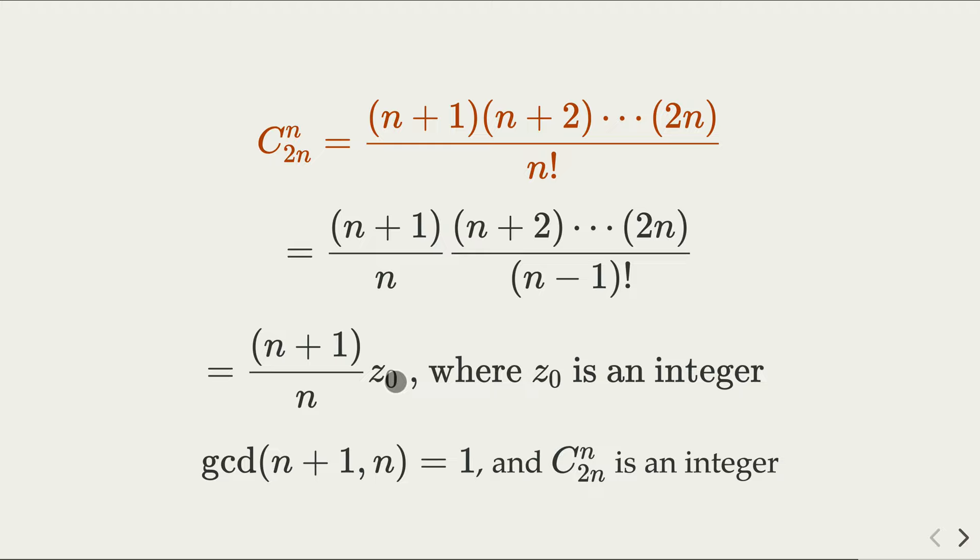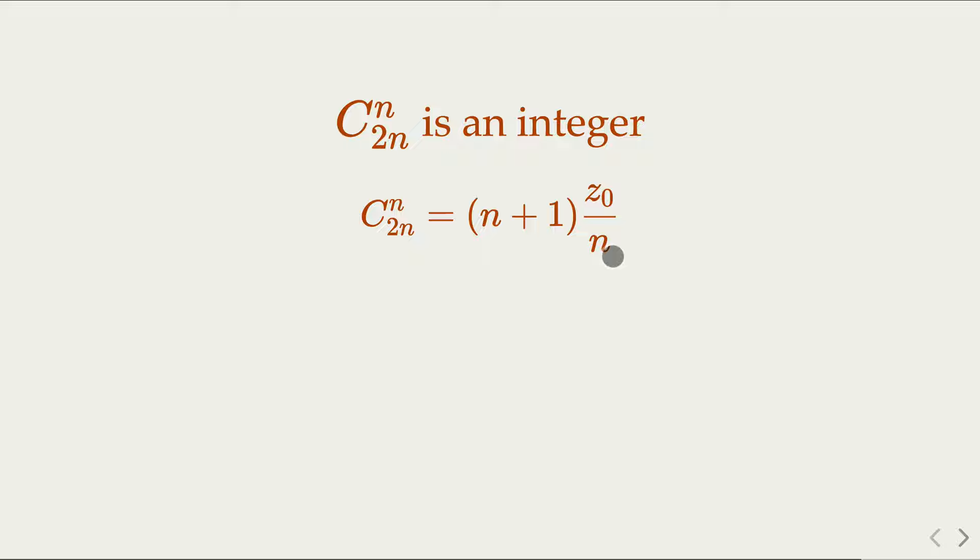So this whole thing is an integer, and n plus 1 and n are relatively prime. So we make the conclusion that z naught over n must be an integer. The ratio here is integer z₁, for example. So n divides z naught; z naught over n must be an integer.